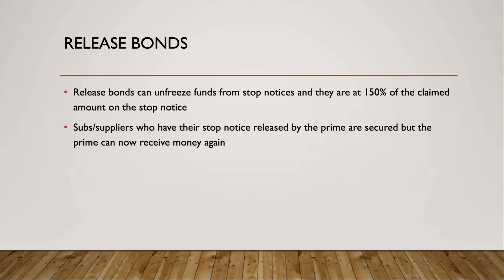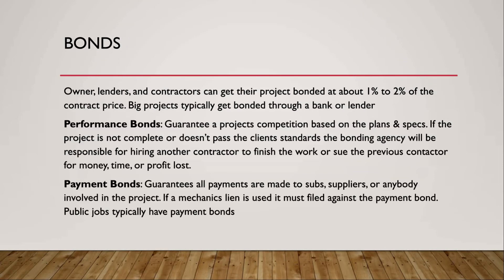A prime might use a release bond because they have a certain amount of work that must be completed by a certain date. Subs and suppliers who have their stop notice released by the prime are secured, and the prime can now receive money again. It simply allows money to flow back to the prime while guaranteeing the sub or supplier will get paid.